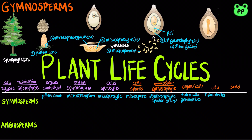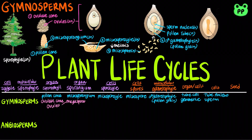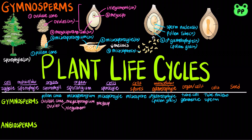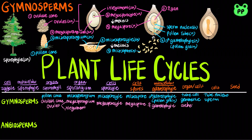The pollen grain contains the tube cell that produces the tube nucleus and the generative cell that produces sperm. The tube nucleus produces the pollen tube, which helps the sperm reach the egg through pollination. The sporophyte also produces another type of cone known as the ovulate cone, which contains many ovules, each with a megasporangium surrounded by protective integument. The megasporangium contains cells known as megasporocytes, which produce megaspores through meiosis.